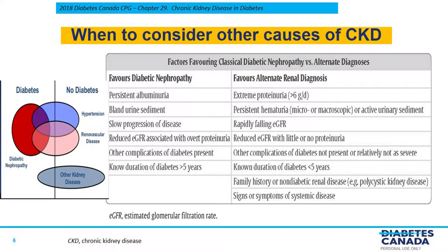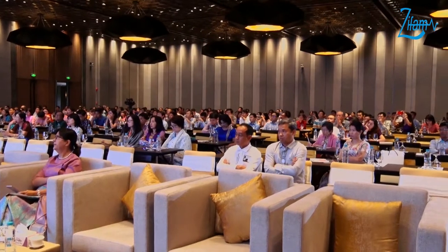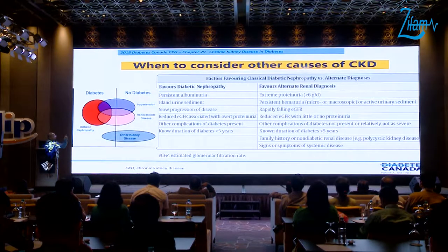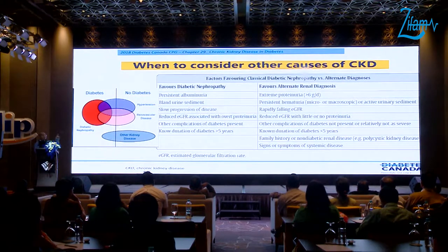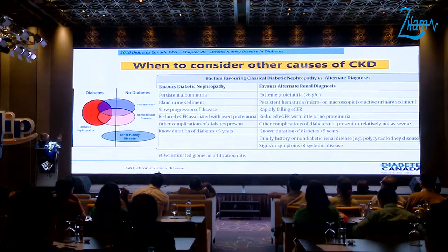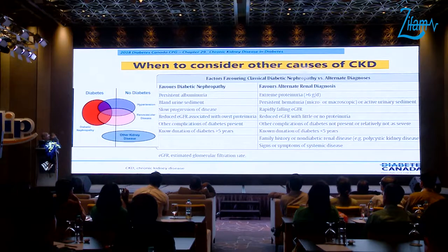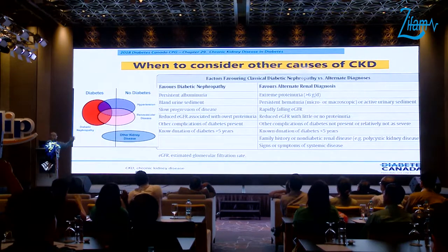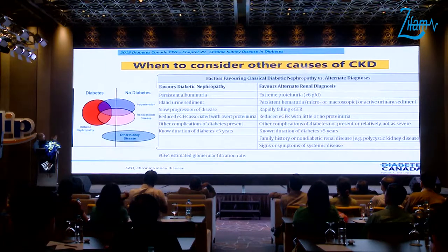These are the features favoring diabetic nephropathy. Number one: persistent albuminuria is favorable for diabetic nephropathy. If you have extremely low protein — more than 6 g/dL — you have to think about another cause; it's not diabetic nephropathy. A bland urinary sediment favors diabetic nephropathy. Persistent hematuria suggests another cause, even in a diabetic patient. Slow progression favors DN; a rapidly falling eGFR suggests other causes. Other diabetic complications support a DN diagnosis, whereas non-diabetic nephropathy would not show those complications.